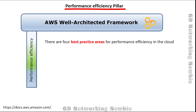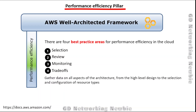There are four best practice areas for performance efficiency in the cloud: selection, review, monitoring, and trade-off. The focus is to gather data on all aspects of the architecture, from the high-level design to the selection and configuration of resource types. We want to review our choices to take advantage of the continually evolving AWS cloud, and monitor and select what helps achieve performance efficiency.